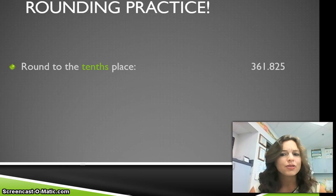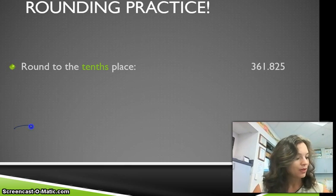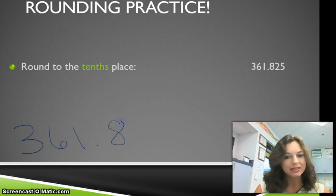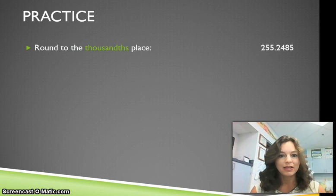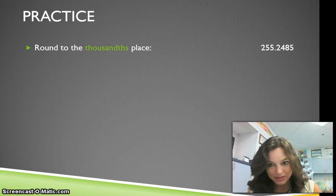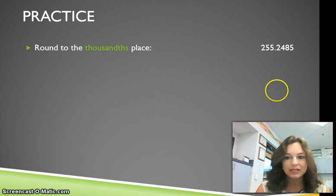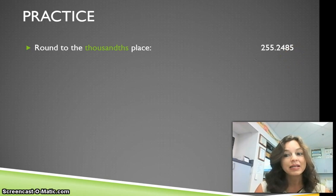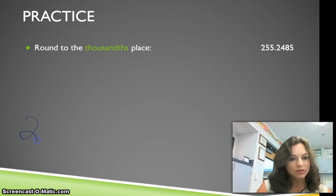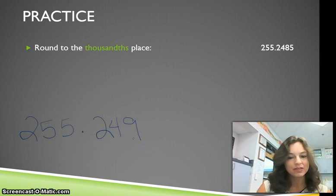Round to the tenths place: 361 and 825 thousandths. I hope you wrote 361 and 8 tenths. Now let's round to the thousandths place. Here we have 255 and 2,485 ten-thousandths — that's a little bit harder. Pause this, round to the thousandths place, then turn this back on to check your work. Our number in the thousandths place is the 8. We're going to look behind the 8 at the 5. Since it's 5 or higher, that 8 becomes a 9. So we have 255 and 249 thousandths as our rounded answer.